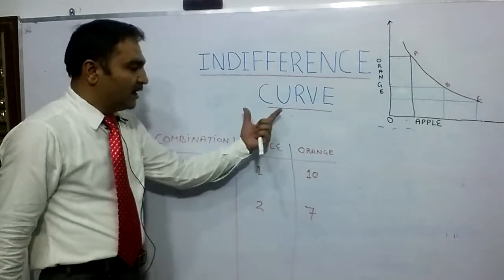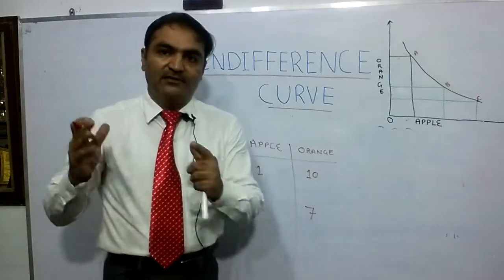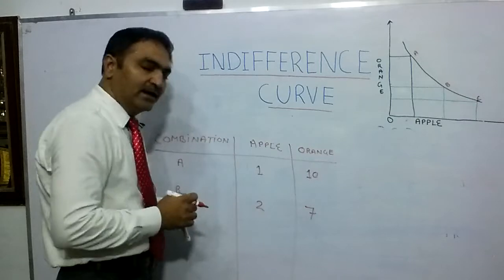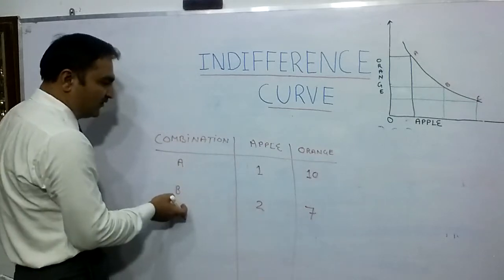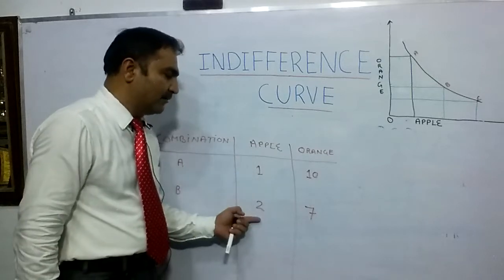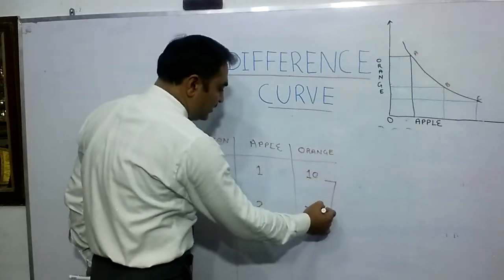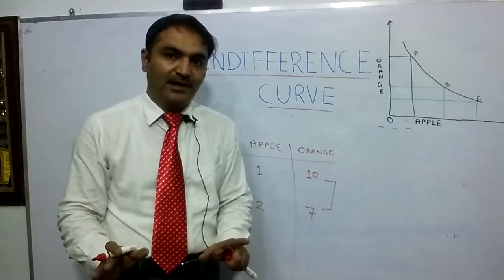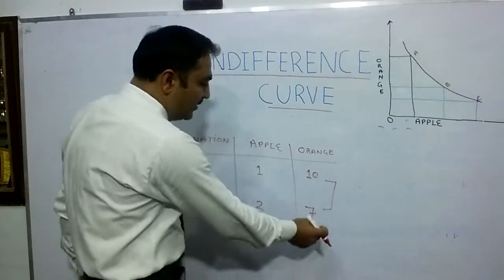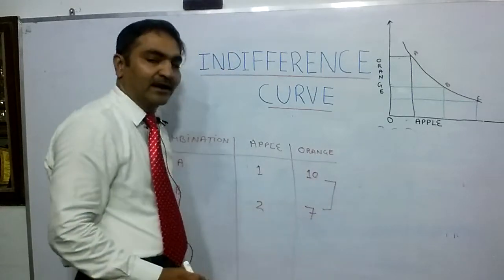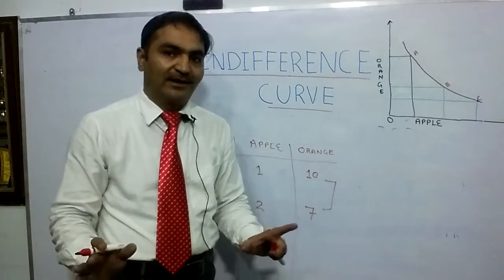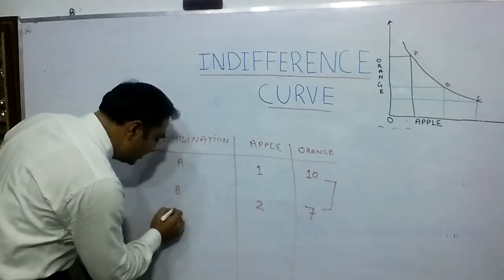So indifference curve says — indifference curve is a locus which shows the different combinations of two commodities. Here we have two commodities: apple and orange. Moving from combination A to combination B — first I had one apple, now I have two apples, but to gain that second apple I sacrificed three oranges. The second combination also gives me equal satisfaction — whether I am at combination A or combination B, I get equal satisfaction.